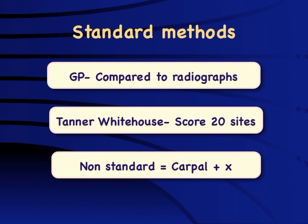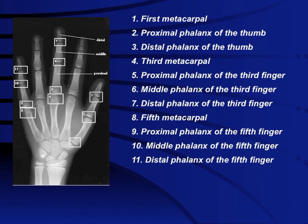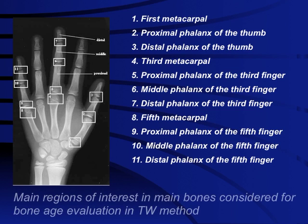In many colleges there are non-standard methods where people use the number of carpal bones plus a particular figure — in some places two carpal bones means one year, in others two years — showing huge variability and a significant need to devise proper criteria. The Tanner-Whitehouse method, while it shows the main regions of interest across the key bones, requires at least 20 sites to evaluate, making it not practical from a pediatrician's clinical perspective.